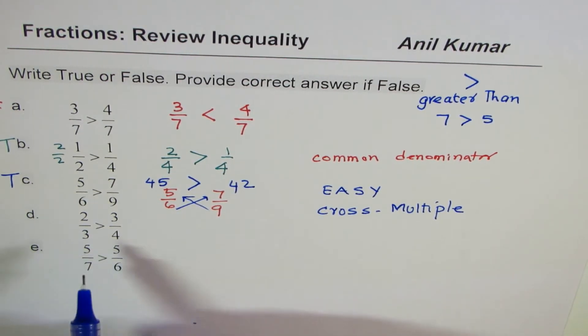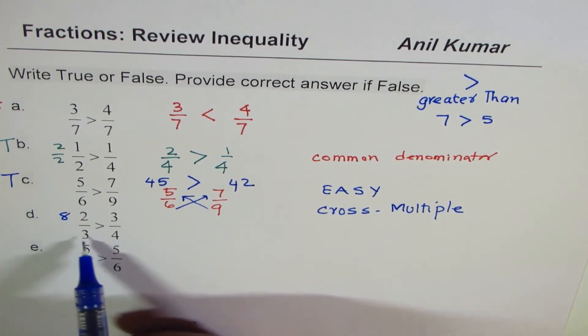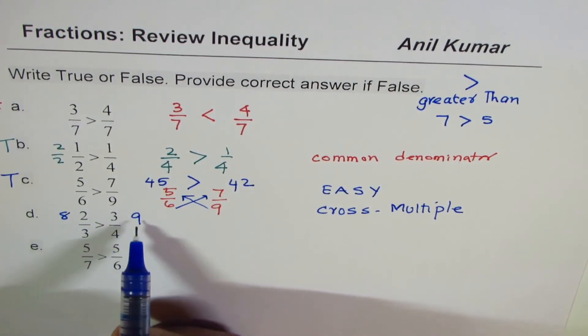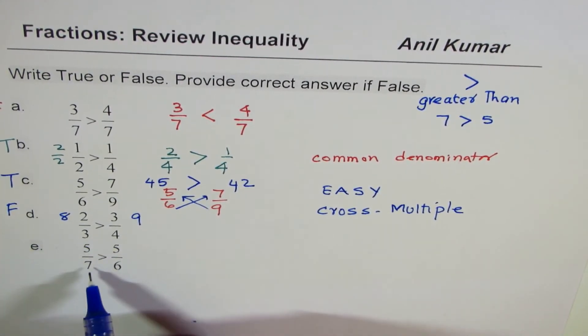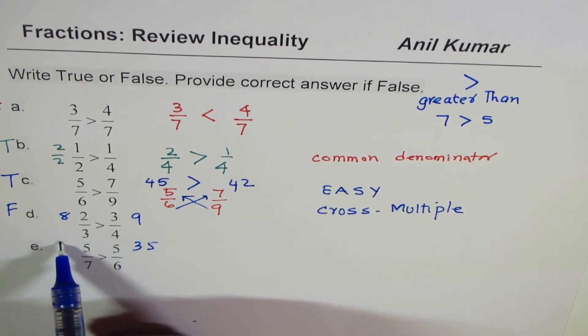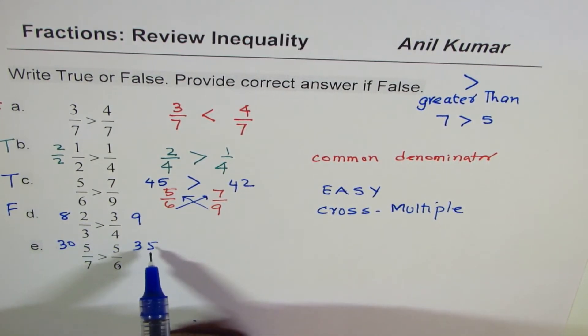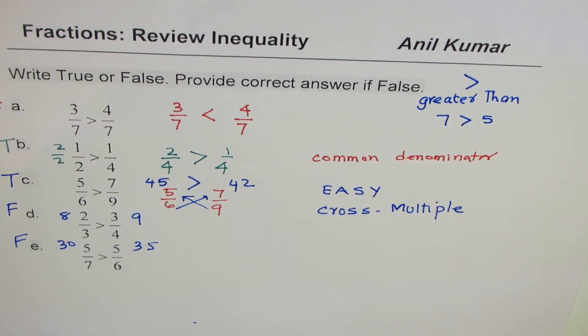So when fractions are given, cross multiply. So when I cross multiply I get 4 times 2 as 8, 3 times 3 is 9. We know 9 is greater, not 8, so it is false. Here we get 7 times 5 as 35, 6 times 5 is 30. 35 is greater, 30 is lesser, so this is also false.